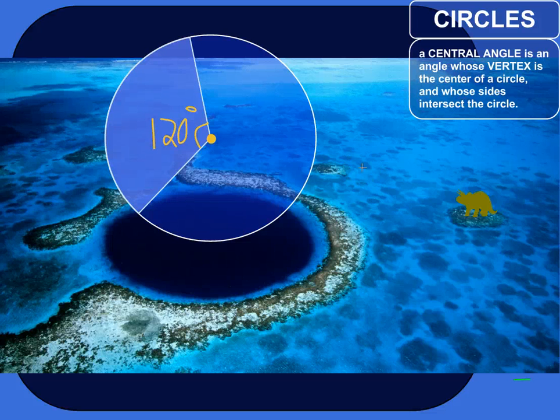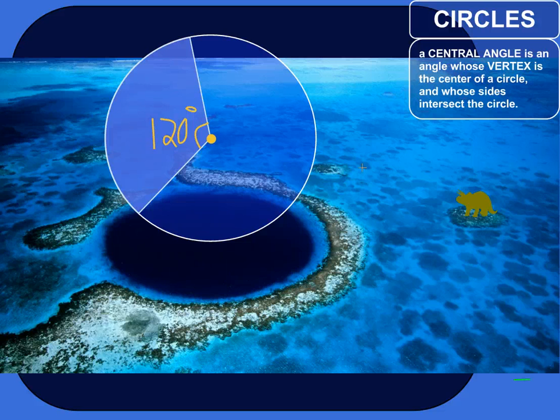Alright, a central angle is an angle whose vertex is the center of a circle, and whose sides intersect the circle.